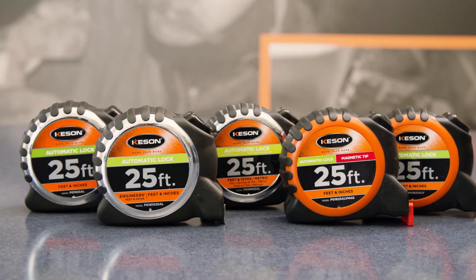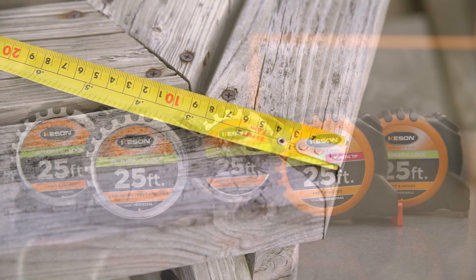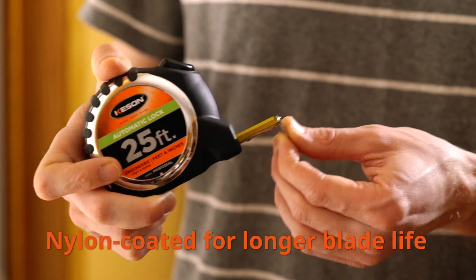Kassin introduces the AutoLock series of short tape measures. The blades are nylon coated for longer blade life and abrasion resistance.